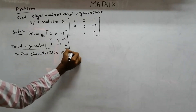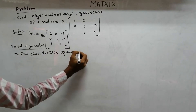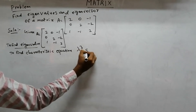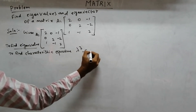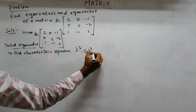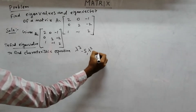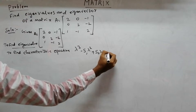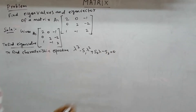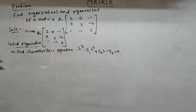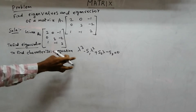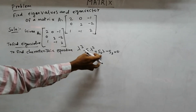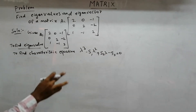The characteristic equation is: lambda cubed minus s1 times lambda squared plus s2 times lambda minus s3 equals 0.